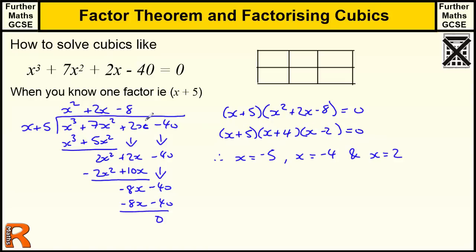A slightly more ad hoc way of doing it — rather than the polynomial long division method, which can be a little bit confusing if you haven't practised it much — is to use a grid method. If you think about x plus 5 as two separate terms that are going to create some terms, the quadratic clearly has to start with x² because we need x³ and we're multiplying by x. And we must know the last term is minus 8, because we're going to times by 5 to make minus 40.